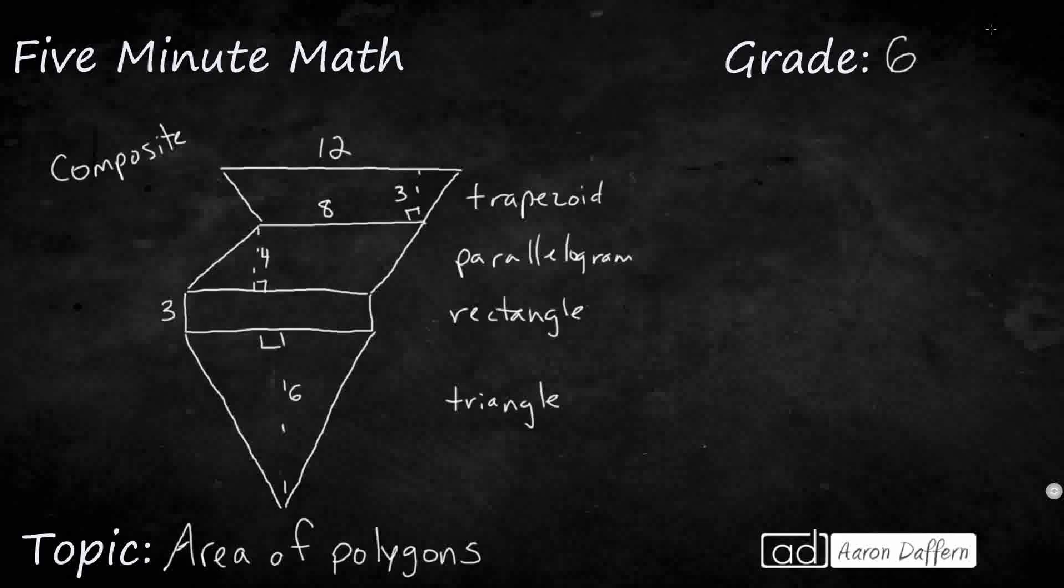If I wanted to find the area of this composite shape, I could use the additive property of area. That basically says if you have this strange looking shape, you can cut it up into smaller shapes, add the area of all the smaller shapes, and you have the area of the larger composite shape.